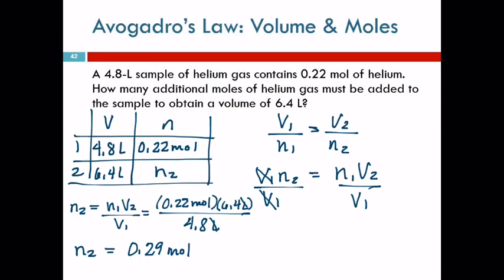When the balloon is 6.4 liters, it will have a total of 0.29 moles of gas in it. So how much gas had to be added? The difference. 0.07.